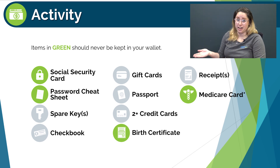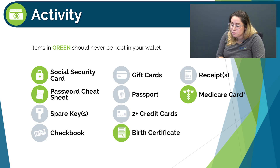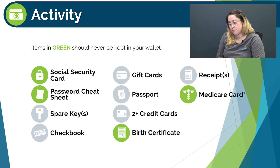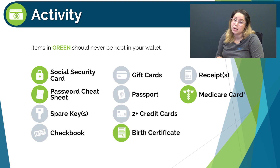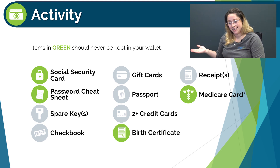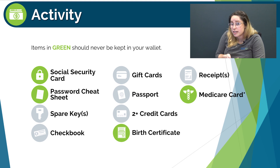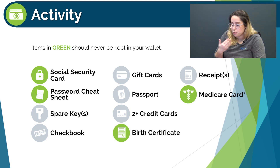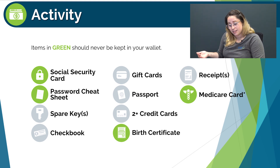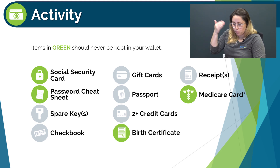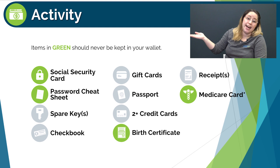Lastly, we have Medicare cards. Older Medicare cards list your social security number on them, which makes it a risky card to keep with you, hence why it's in green. But newer Medicare cards don't list your social security number, so the risk is significantly less — more so in the gray category.